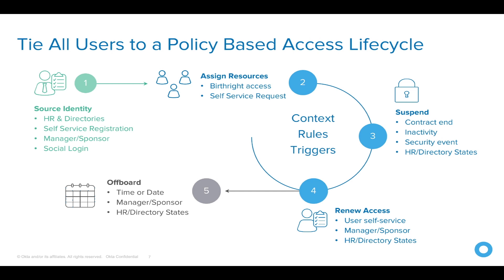In step four, you might want to renew access, especially for contractors. How do you do that? Do you have a manager who attests to your contract date, or do you want this to be automated? In step five, you need to have a clean process for offboarding users, whether internal employees or contractors. This might be based off of a specific date, or a trigger from your HR system, or maybe even a directory.